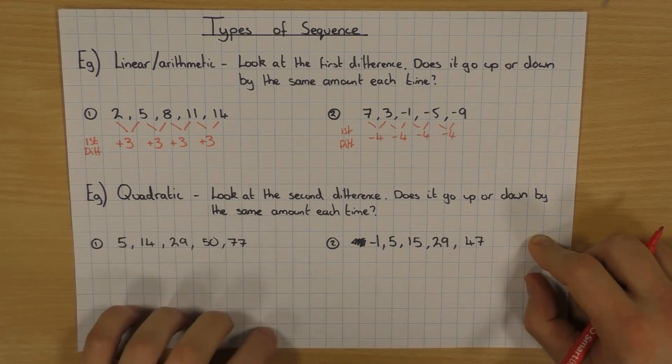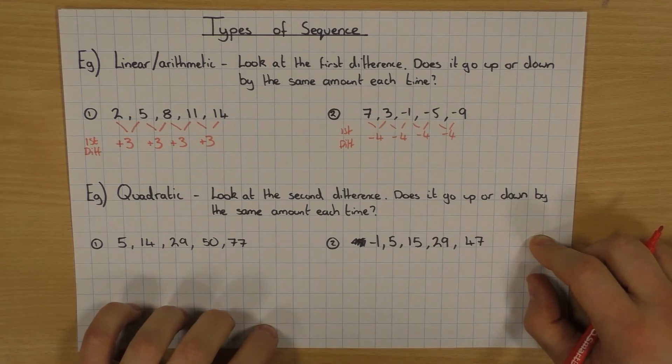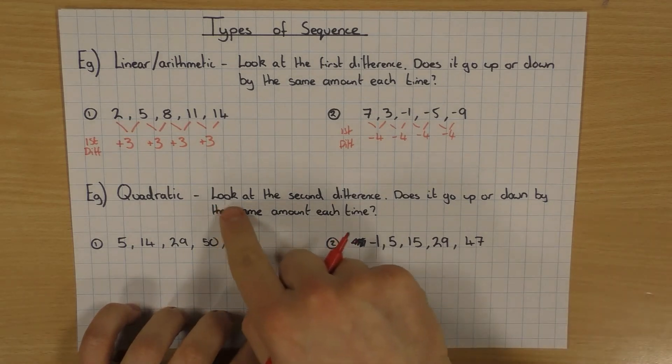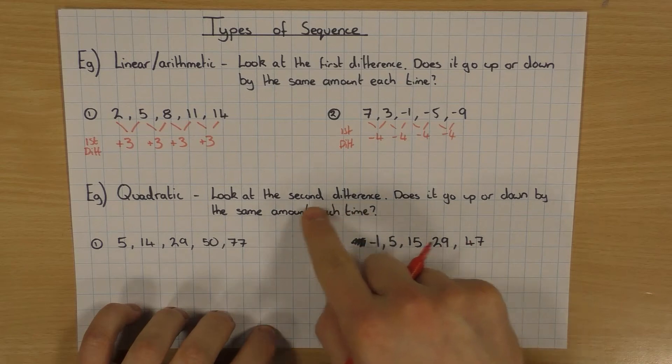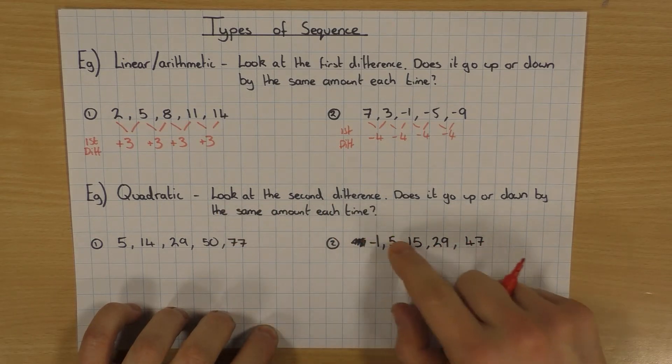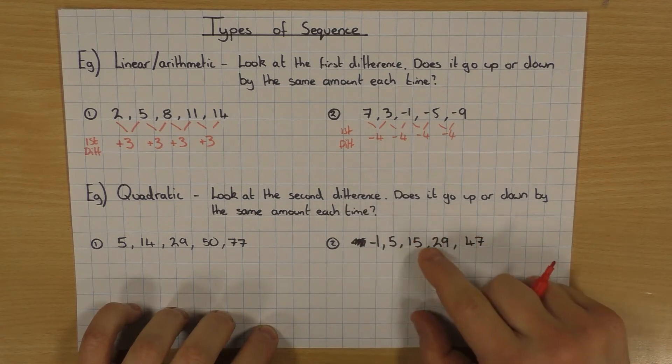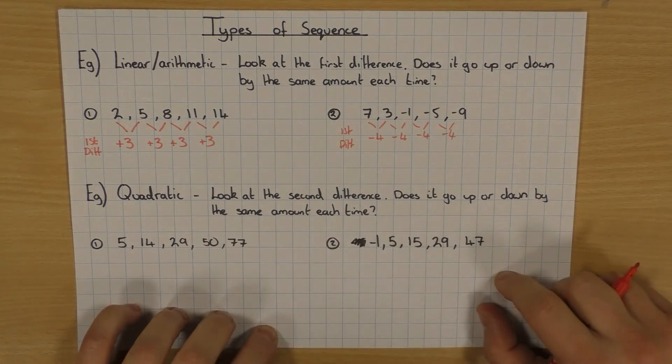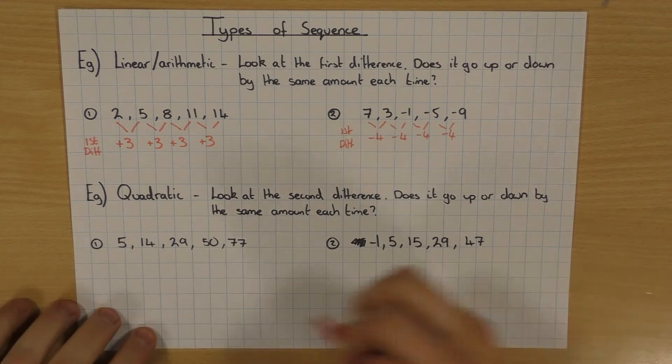The second type of sequence we're going to have a look at is a quadratic sequence. So with this one, we ignore the first difference. Well, not ignore it, but we're looking more specifically at the second difference. If the second difference goes up or down by the same amount, then the sequence is quadratic. So two examples here.